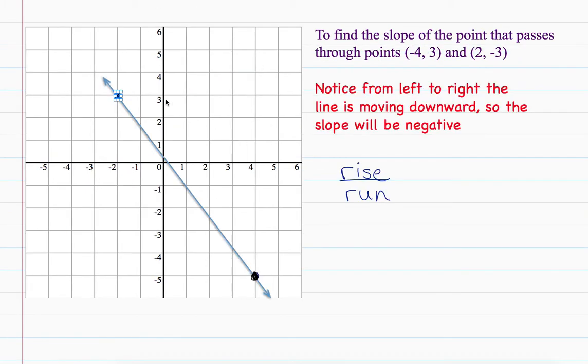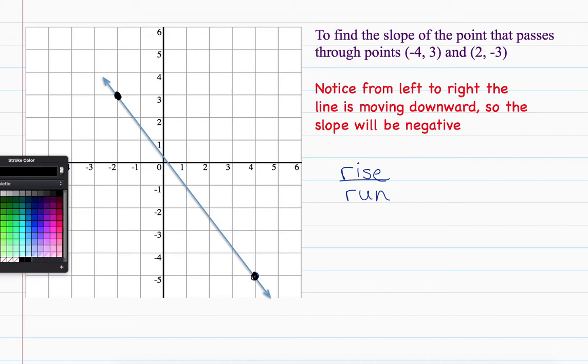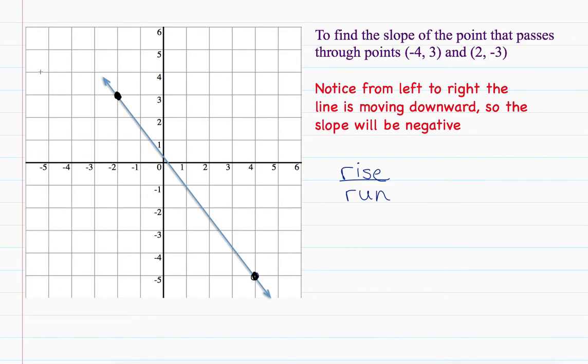Let's look at another one. And notice here that moving from left to right, this line is going down. So that means that the slope is going to be a negative number. So, again, let's pick the first point that we see going from left to right, and that's this one.